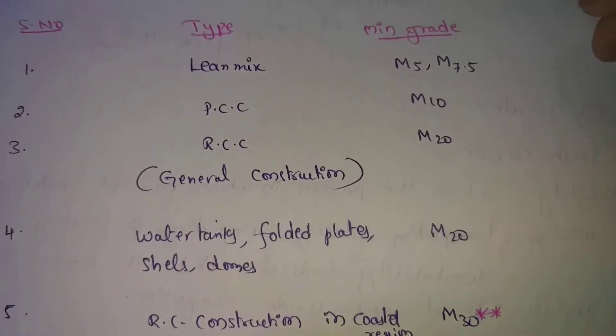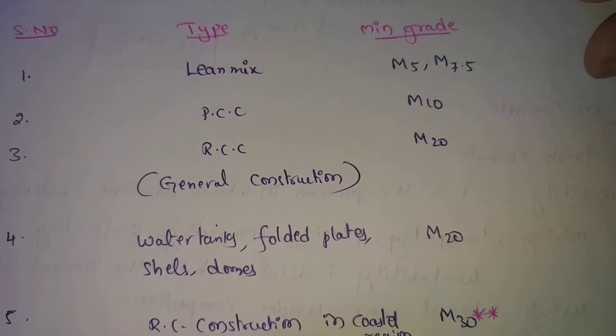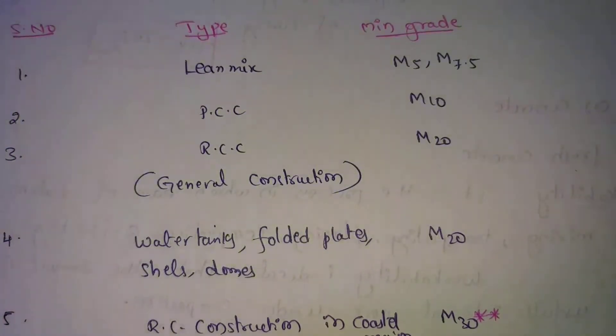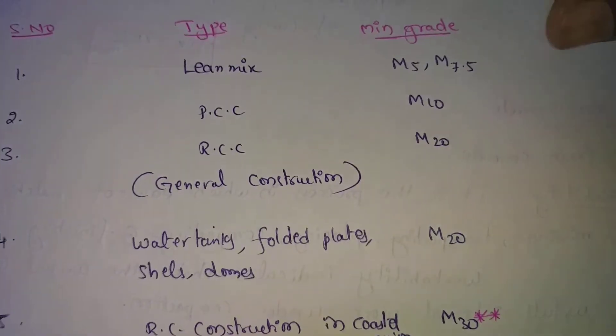Next, water tanks, folded plates, shells and domes use M20. Domes, the best example is Taj Mahal, which has domes. Water tanks, domes, folded plates, shells use M20.